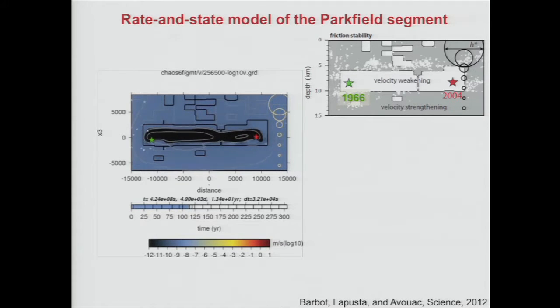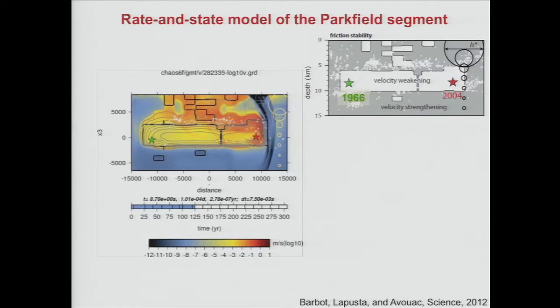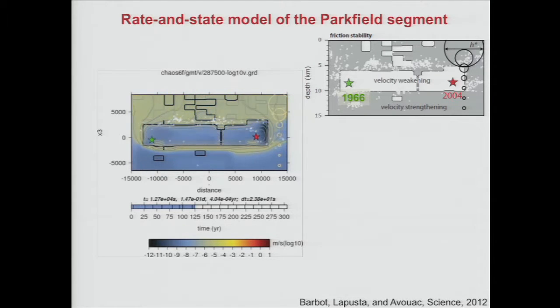The earthquake is about 20 kilometers long and propagates at three kilometers per second, so the whole event is gone in about seven seconds. Then there is some accelerated post-seismic slip, and now we're in a typical interseismic period — the fault is locked, around the fault we have creep, and we have all sorts of slow motions going on. These two stars actually show the real nucleations of the 1966 and 2004 events. Our model has these spontaneous transitions between nucleating in one corner and then the other corner of the locked area.